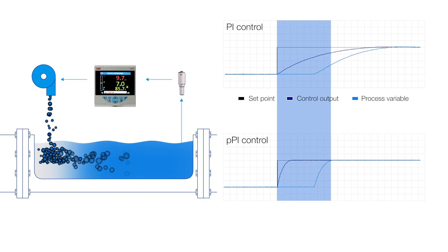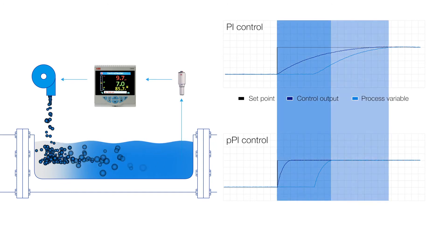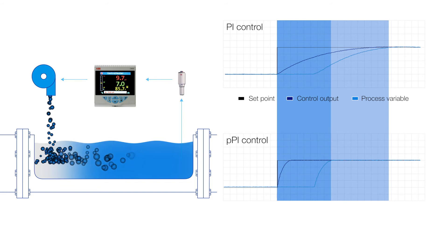Typically, the pH level will return to the desired value in less than half the time of traditional control methods.